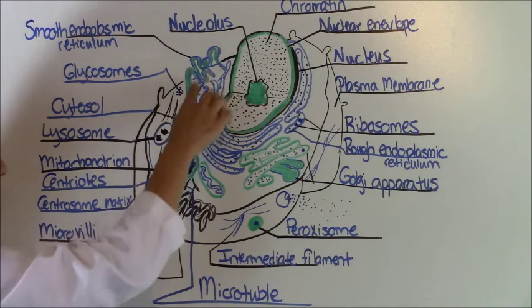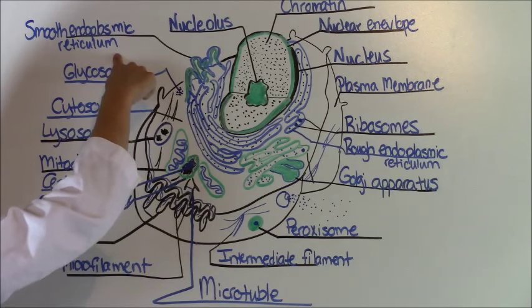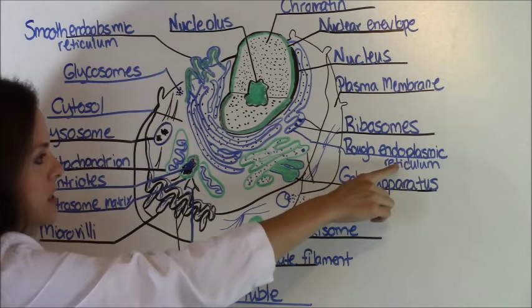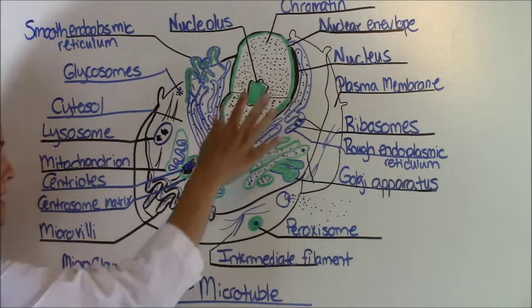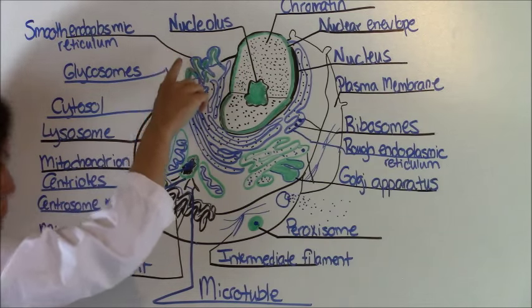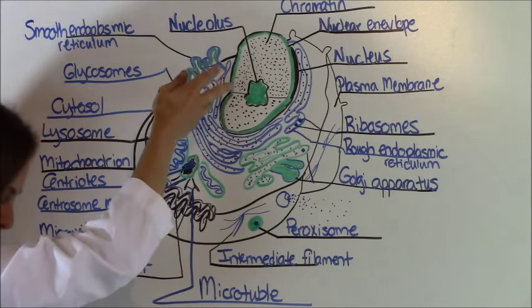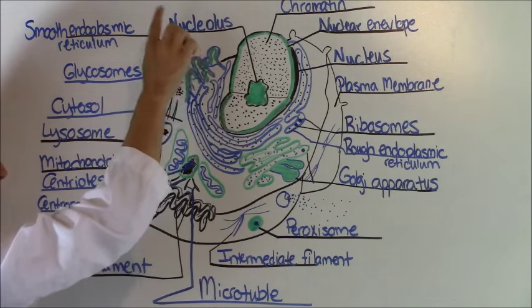Next right above that is your smooth endoplasmic reticulum. And also you have rough endoplasmic reticulum. But first let's go over the smooth. The smooth endoplasmic reticulum is responsible for lipid metabolism, which in other words breaks down and uses fats.